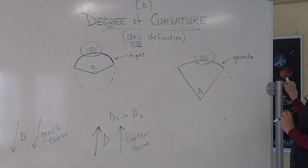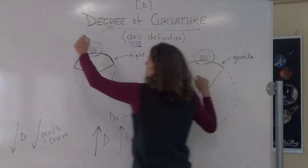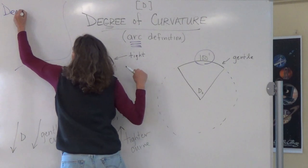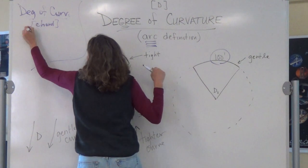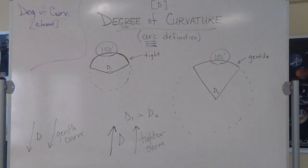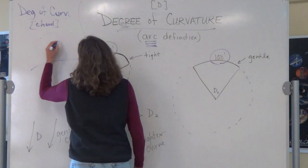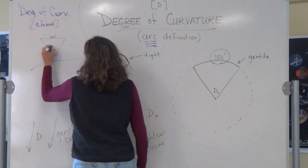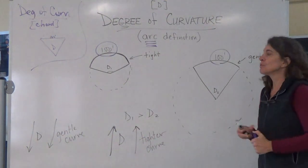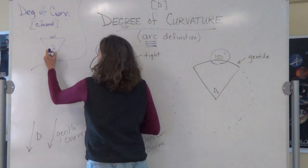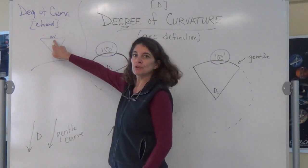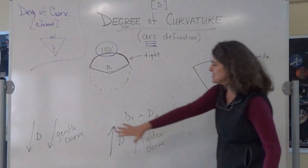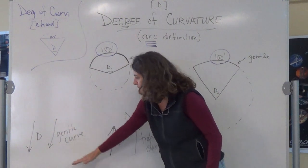There's another definition of the degree of curvature called the chord definition. The degree of curvature still has to do with 100 feet, but now it's not 100 feet of arc — it's 100 feet of chord. The degree of curvature is always the angle that encompasses 100 feet: if it's an arc definition, it's 100 feet of arc; if it's a chord definition, it's 100 feet of chord. Whether we deal with the chord or arc definition, as the degree of curvature gets smaller, we have a more gentle curve.